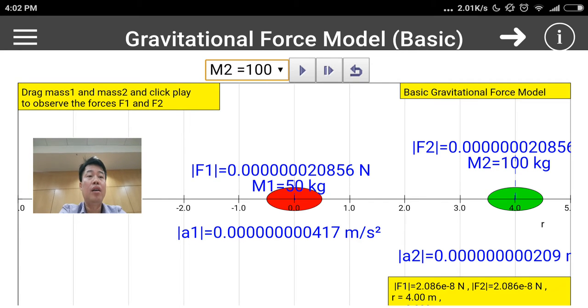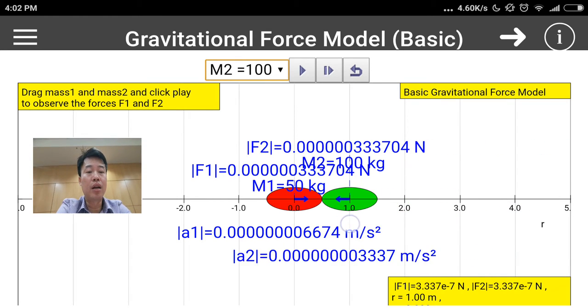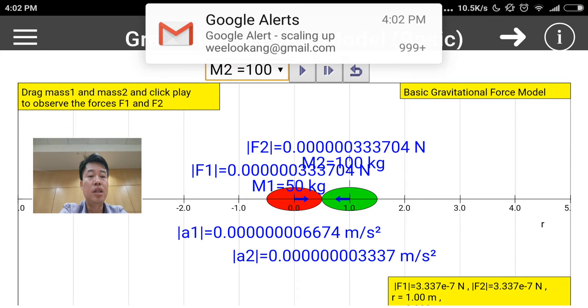So this is what we mean by being directly proportional to the product of the masses, which is m1 and m2. Now what do we mean when we say inversely proportional to the square of the separation of the center of the mass? Let's say we put it side by side. The separation is in this case one meter apart.